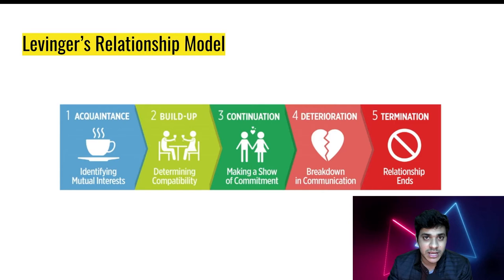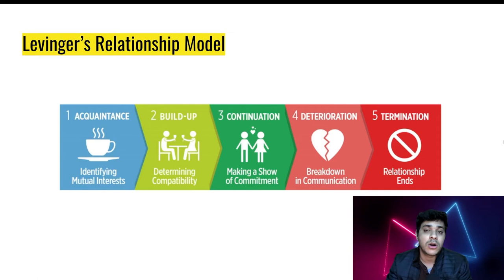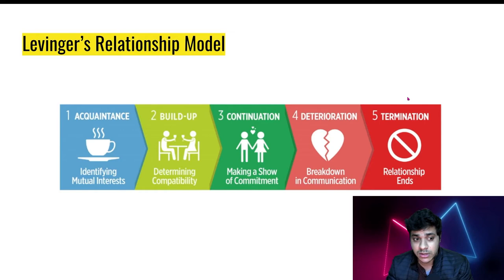The five stages of relationships according to Levinger are: A for acquaintance, B for buildup, C for continuation, D for deterioration, and E for ending or termination. We want to stay away from deterioration and termination, and stay somewhere around acquaintance, buildup, and continuation.